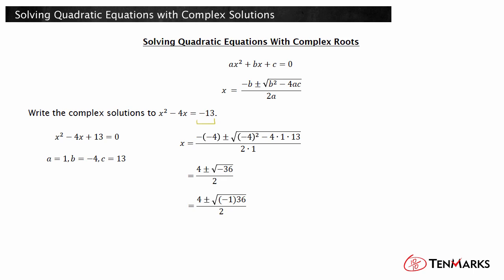Remember that i squared is negative 1 since i equals the square root of negative 1. Replace negative 1 with i squared. The square root of i squared times 36 is 6i.